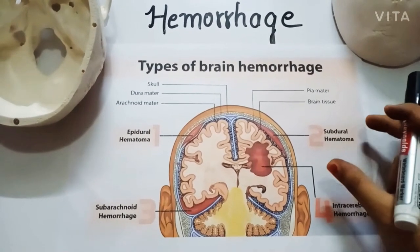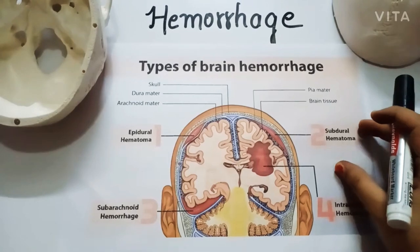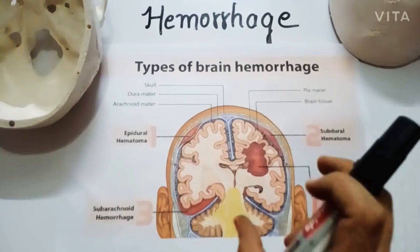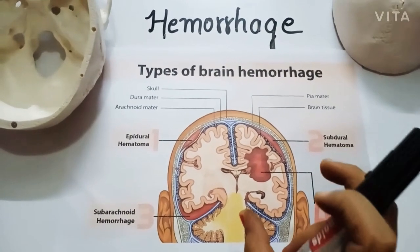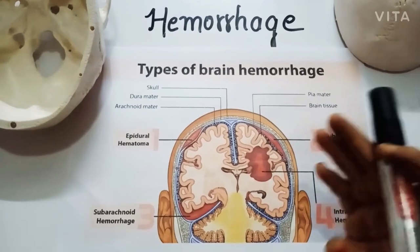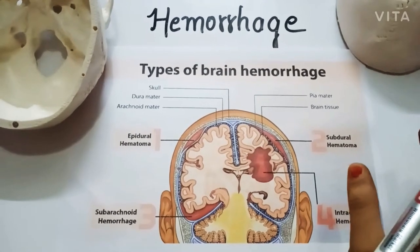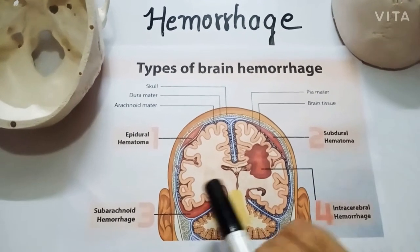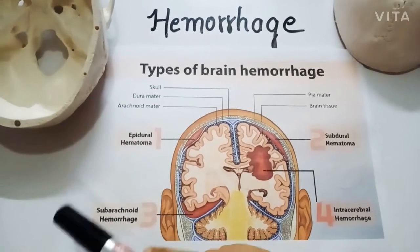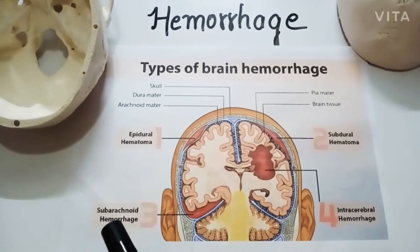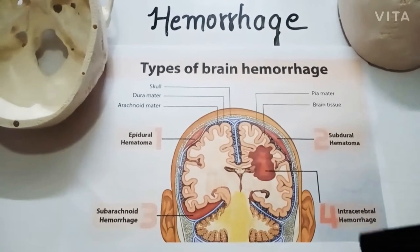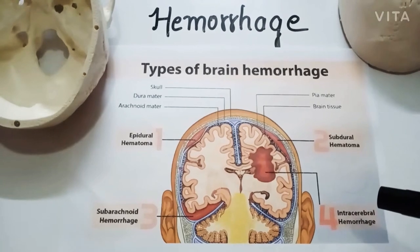These are the types of brain hemorrhages we are going to study today. In this chart you can read four terms: epidural hematoma, subarachnoid hemorrhage, subdural hematoma, and intracerebral hemorrhage.